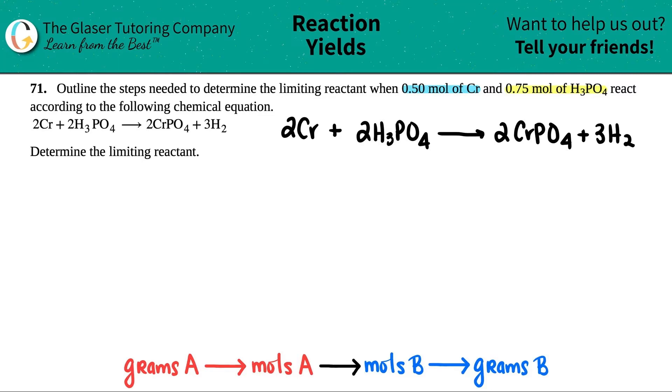So I'm going to outline the steps and then we're just going to get to it. This one's pretty straightforward, mainly because they did give us a balanced equation. The first thing we're going to do is we're going to list out what we have. Okay, so they told us that I had 0.5 moles of chromium. Here's the chromium. I'm just going to say that I have 0.50 moles. And they told us that I had 0.75 moles of the H3PO4.